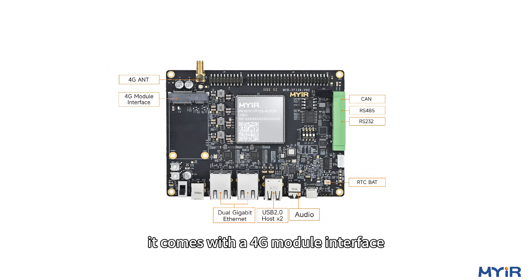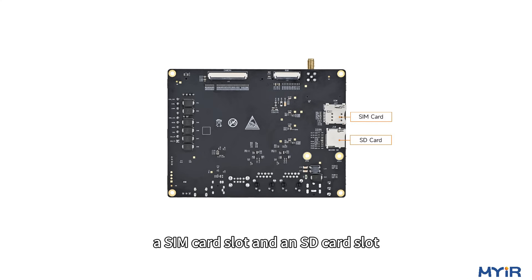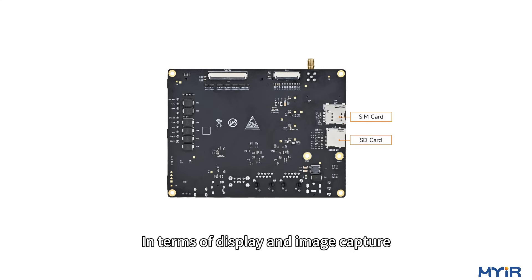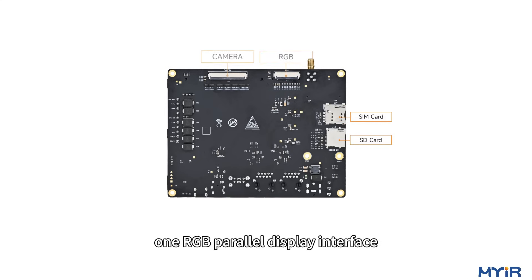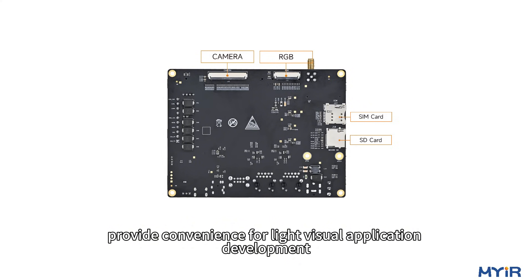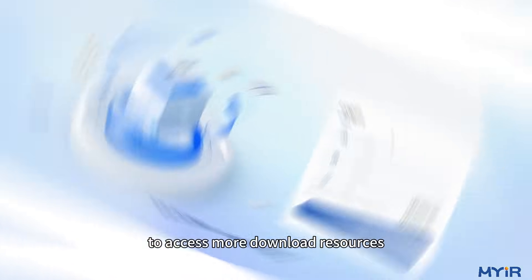For wireless connectivity and storage expansion, it comes with a 4G module interface, a SIM card slot, and an SD card slot. In terms of display and image capture, one RGB parallel display interface and one 16-bit parallel camera interface provide convenience for lightweight visual application development.